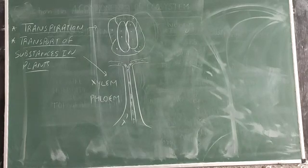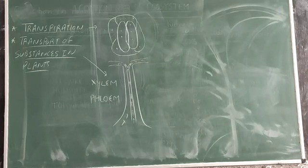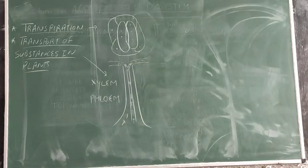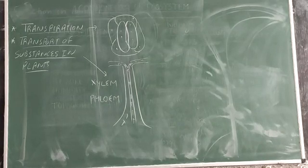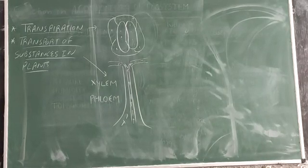We know very well that leaves synthesize the food and the food has to be transported to all the parts of the plant. This process is done by another vascular tissue called the phloem. So xylem and phloem both help in the conduction or transport of substances in the plant.